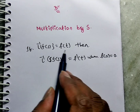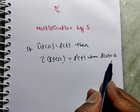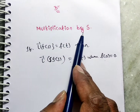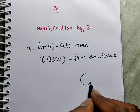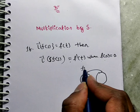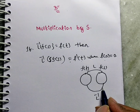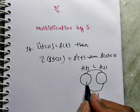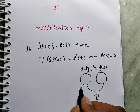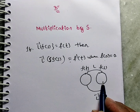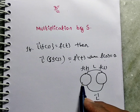So the statement is: if L inverse of F(S) equals f(T), then L inverse of S·F(S) equals f'(T), where f(0) equals 0. We are doing multiplication by S on F(S). This is f(T) and this is F(S). If you are multiplying S on the right side, then on the left side what we are doing is differentiating — f'(T). If you multiply by S on one side, you differentiate on the other side.